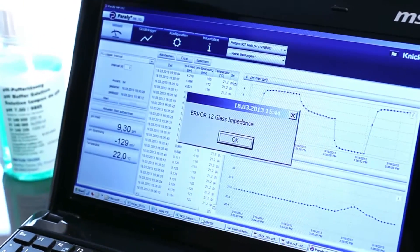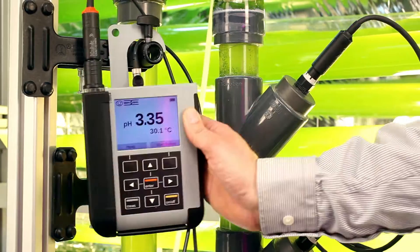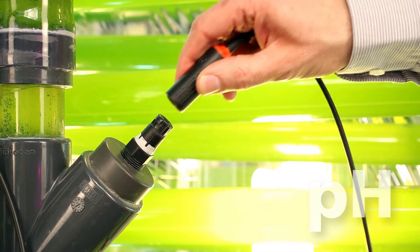An error message from the control system calls for inspecting the sensor on site. Portavo makes it possible. Plug and measure. Direct access to the measuring point.